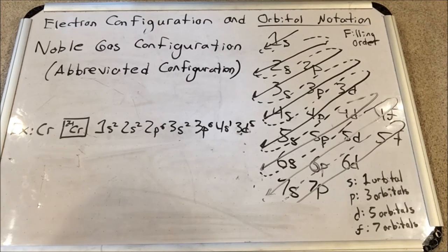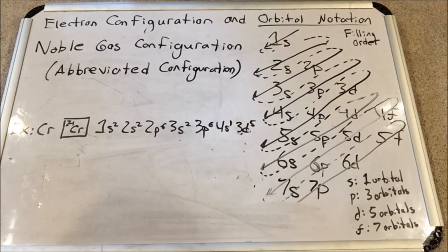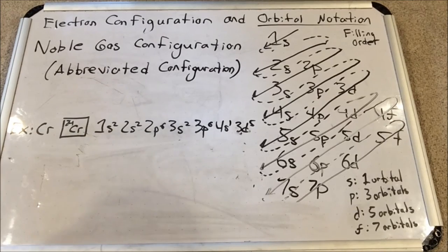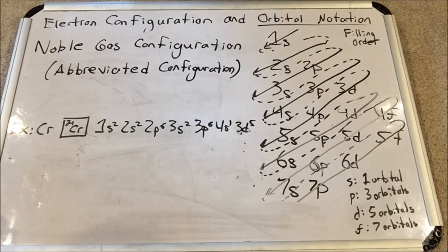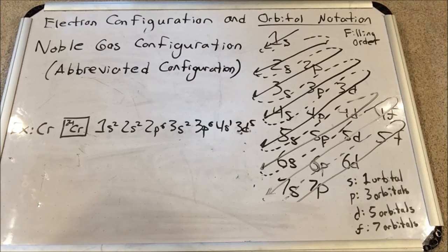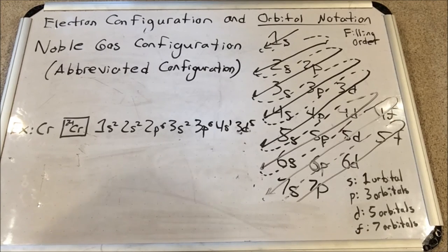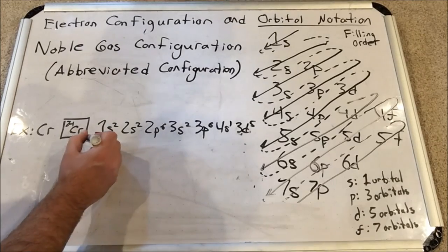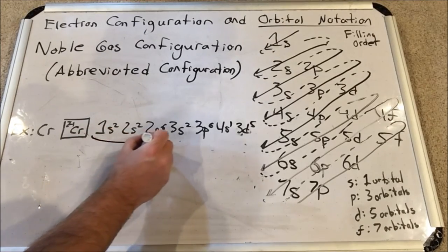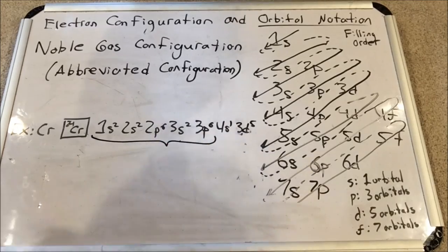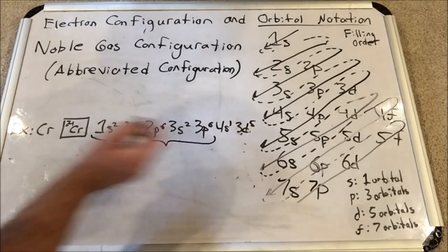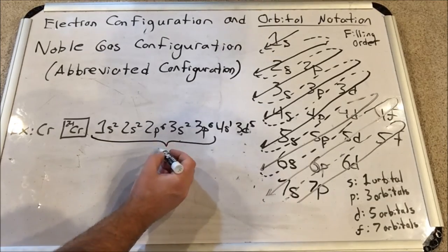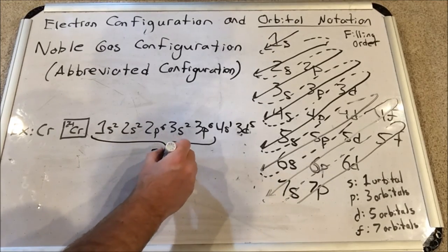You can abbreviate it by going back, if you have a particular element you're looking at, for example chromium here, by going back and seeing what the closest noble gas is with a smaller atomic number. For chromium, the case is argon. Now argon's entire electron configuration is a portion of chromium's up to 3p6, and so what's often done is that this is abbreviated just as argon.